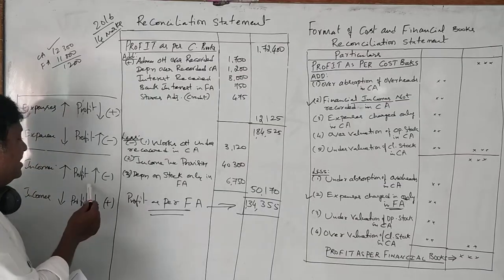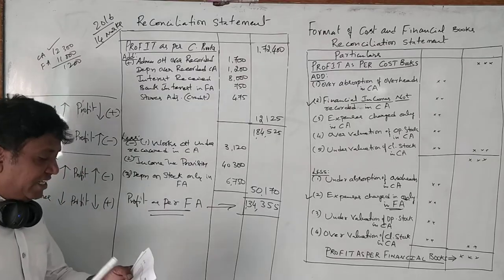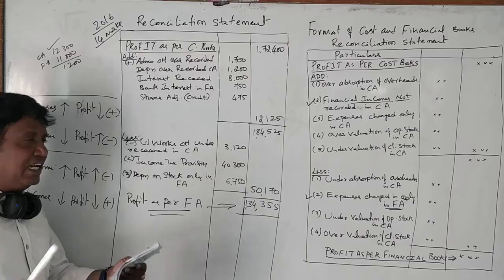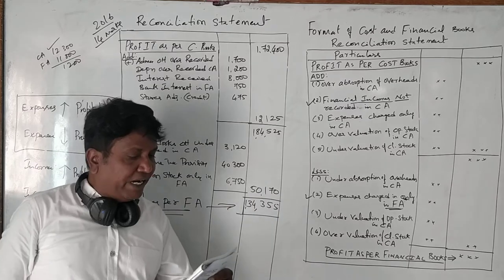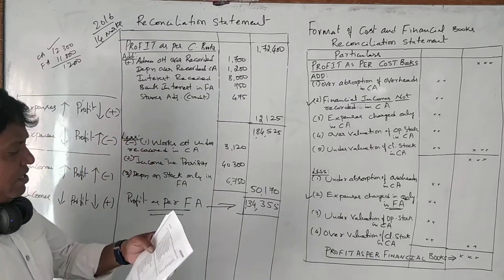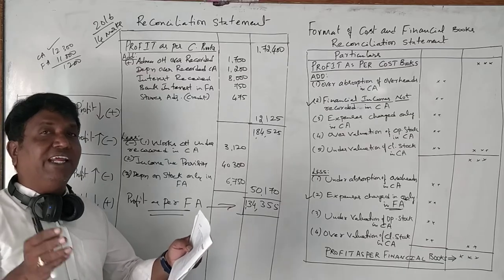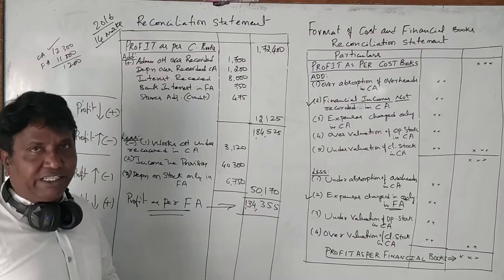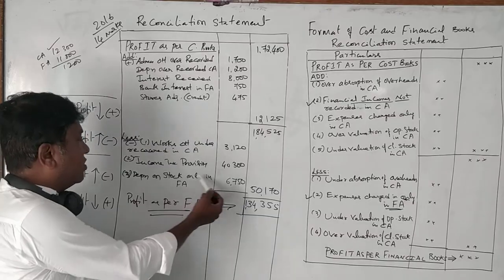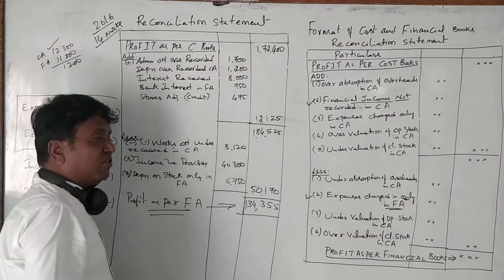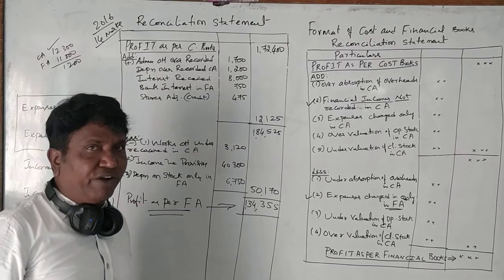Income tax is an expense in financial accounts. Expenses recorded only in financial accounts reduce profit. The total comes to 1,21,25 and 1,84,525.